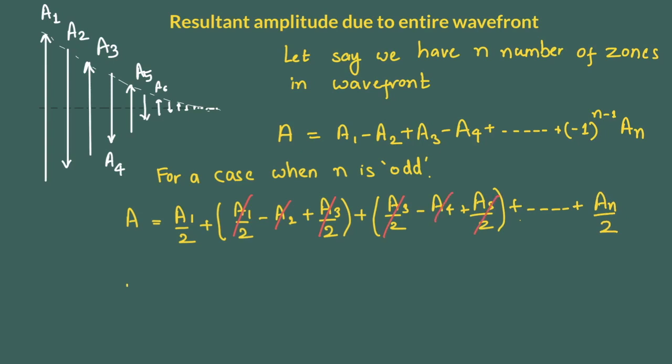So roughly we can say that a1 by 2 plus a3 by 2 will cancel out a2 and same process will continue for higher number of zones and n being odd we will be left with the last term as plus a n by 2. So lastly we can say that net or resultant amplitude due to entire wavefront can be given by a1 by 2 plus a n by 2 if n is odd.